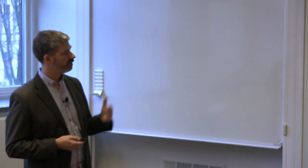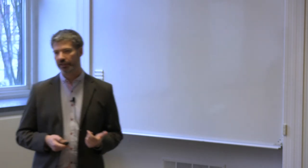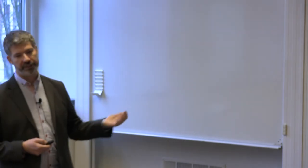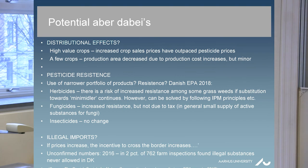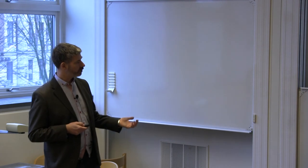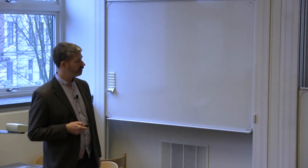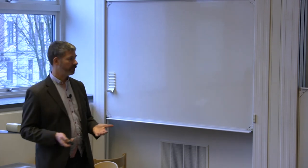According to the EPA, a few crops, for a few crops production area has decreased due to production cost increases, but minor effects. Pesticide resistance has been a huge issue in Danish agricultural politics when discussing this tax, because of course, there's a risk that some products are taken off the market. And we know that some products have been taken off the market. And therefore, you increase the risk of pesticide resistance. According to the Danish EPA, last year, for herbicides, there is a risk of increased resistance among some grass weeds if substitution towards what is called mini products continues. But they say it can be solved by following integrated pest management principles, et cetera.